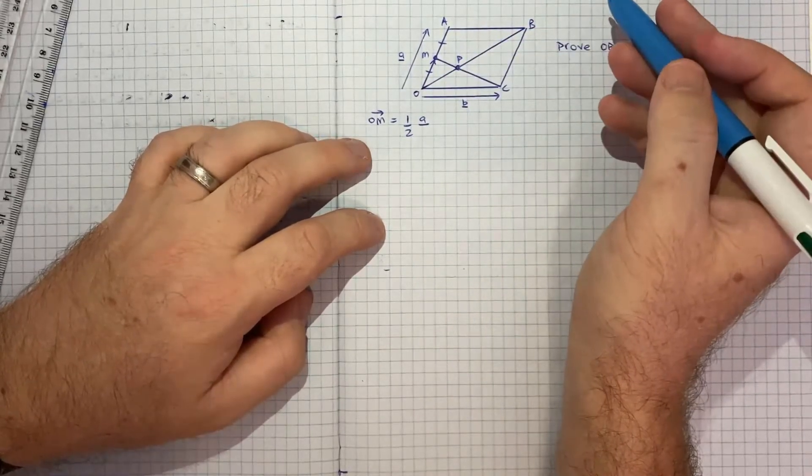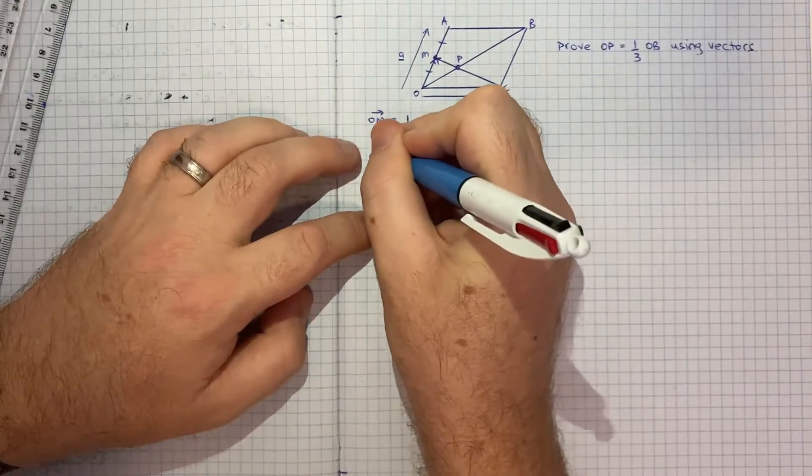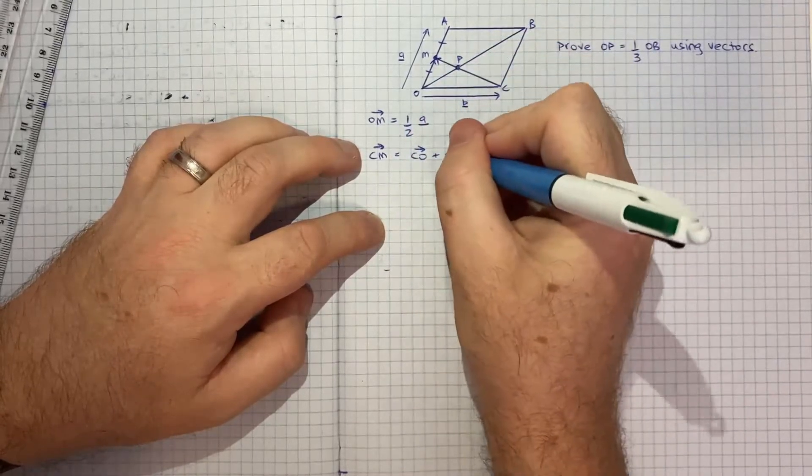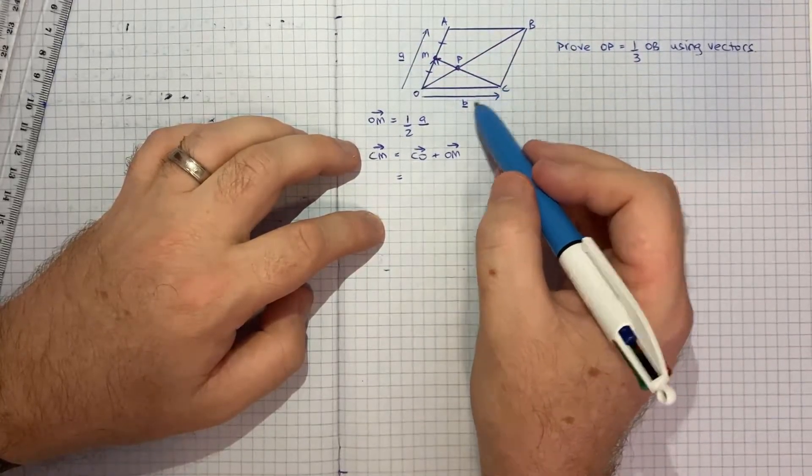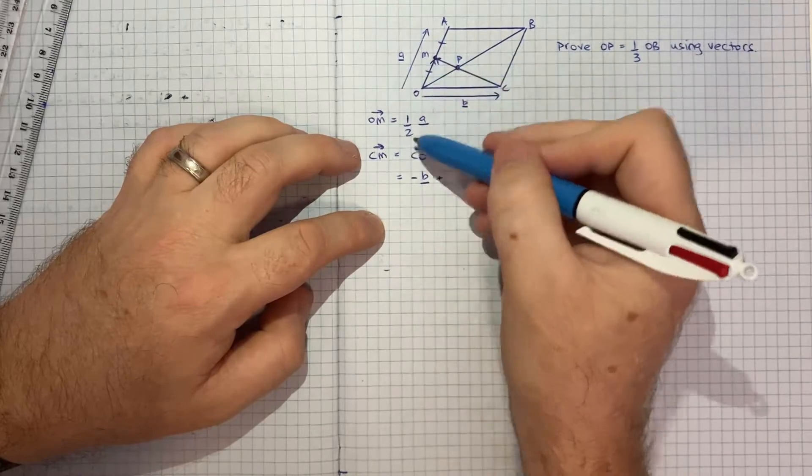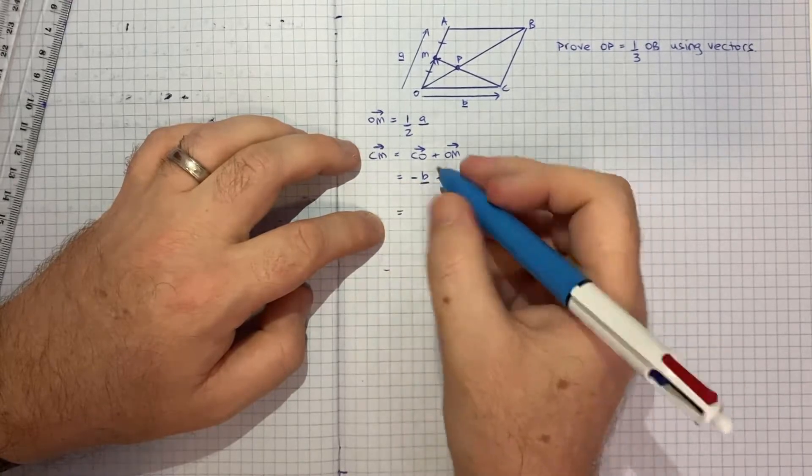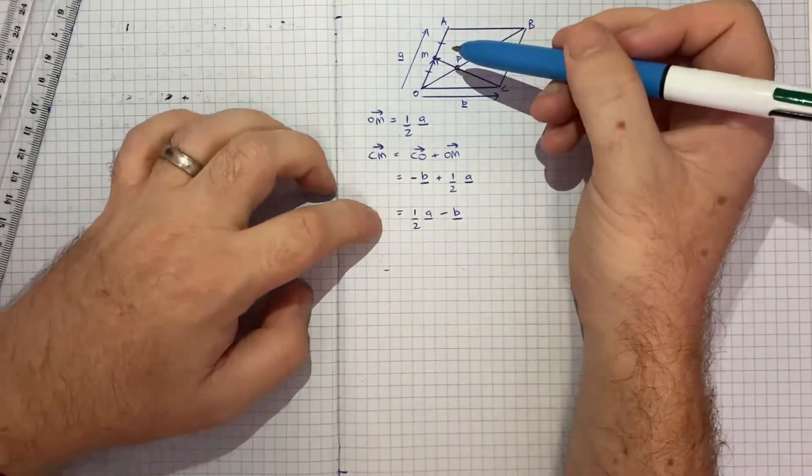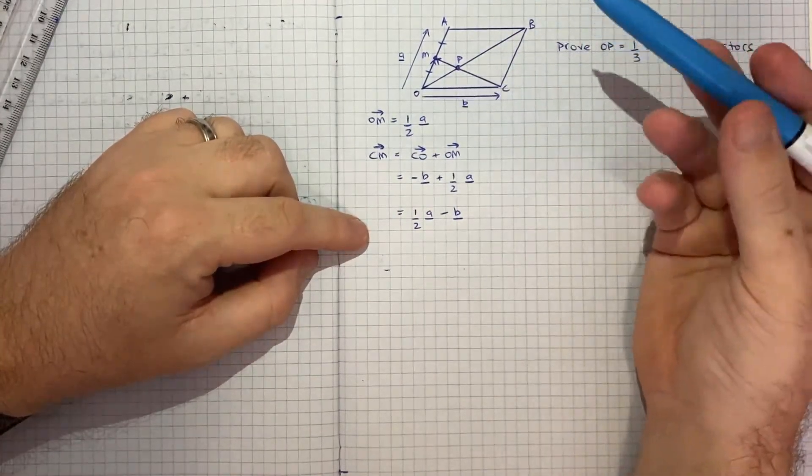Something else we can think about is this vector here CM. The way we can get to CM is we could go to CO and then we could go to OM and in terms of the vectors we've defined that would be the same magnitude as vector B just the opposite direction. So negative B vector plus OM vector that we've just said is a half of A vector. So maybe I'll just write that as a half A vector minus B vector. So that's our CM.